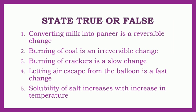Children, your next question: State True or False. Number 1: Converting Milk into Paneer is a Reversible Change. Number 2: Burning of Coal is an Irreversible Change. Number 3: Burning of Crackers is a Slow Change. Number 4: Letting Air Escape from the Balloon is a Fast Change. Number 5: Solubility of Salt Increases with the Increase in Temperature.